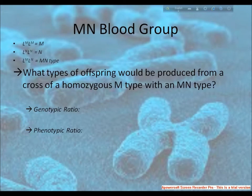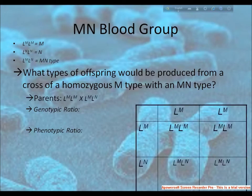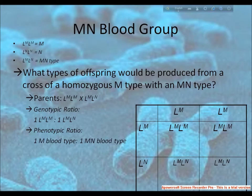What types of offspring would be produced from a cross of homozygous M type with an MN type? The genotypic ratio turns to Lm/Lm equal to 2 and Lm/Ln equal to 2, meaning a 1:1 ratio of M to MN. The genotypic ratio and phenotypic ratio are also 1 M blood type to 1 MN blood type. In this case, the genotype and phenotype ratio remains the same.